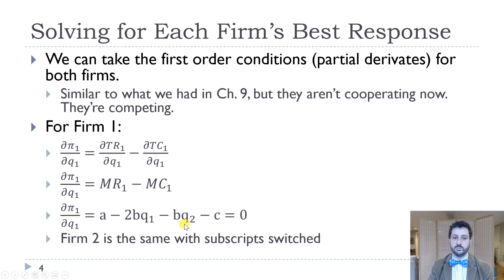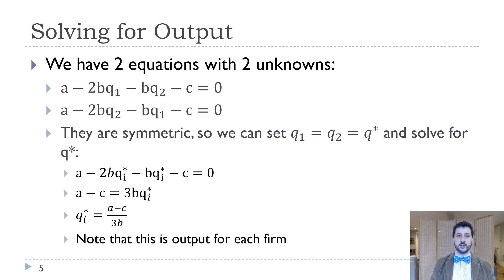And remember, this two just comes from the quadratic on the profit function. And so firm two's is going to be exactly the same, just with the ones and twos switched. So it would be A minus 2BQ2 minus BQ1 minus C equals zero. And we're solving for Q1 and Q2. And so fortunately, we have two equations and two unknowns.